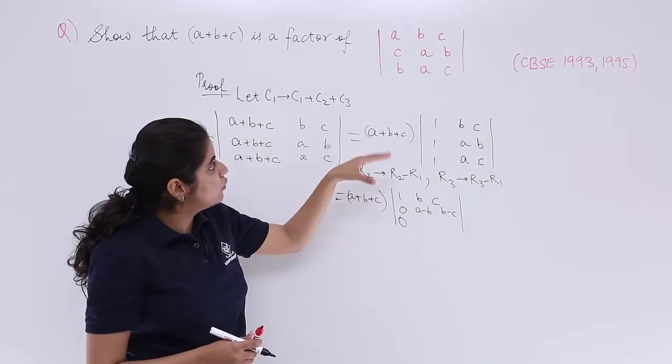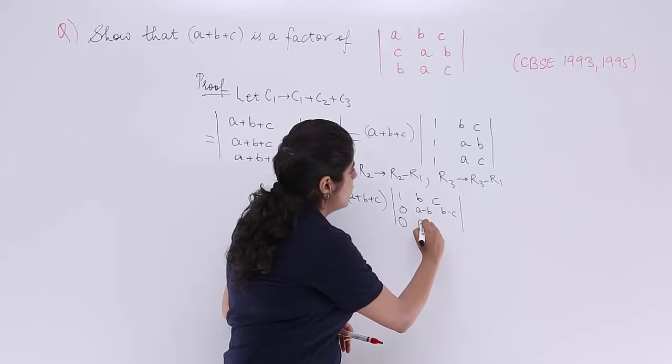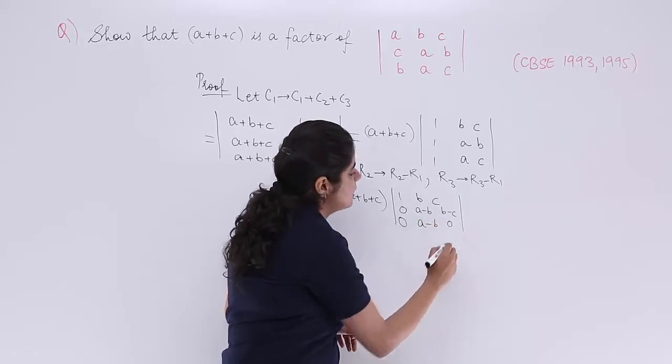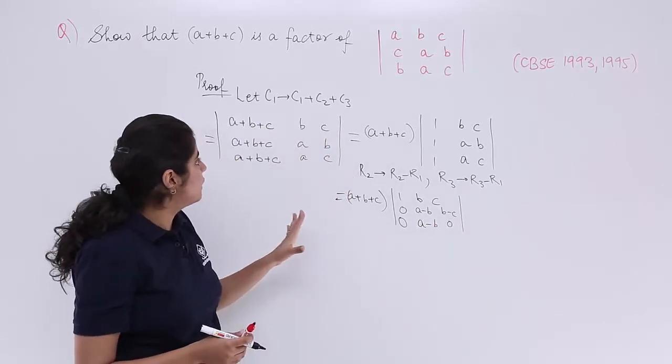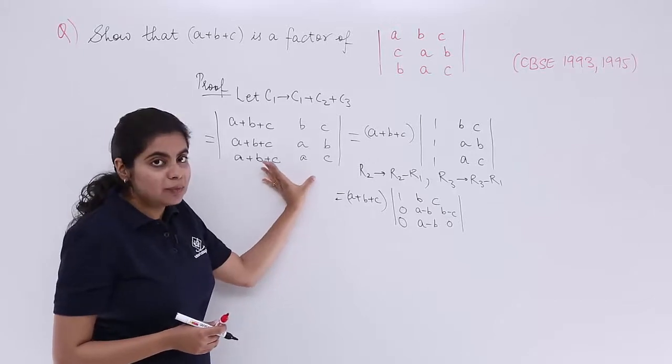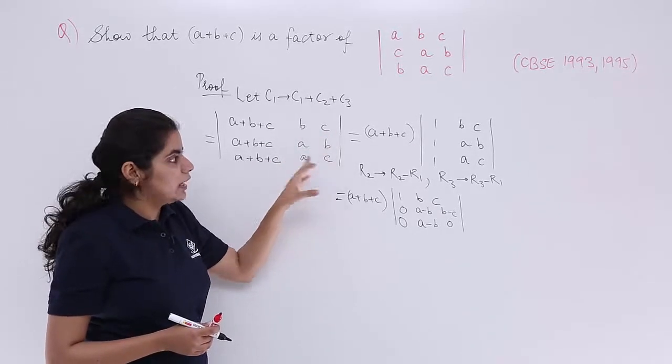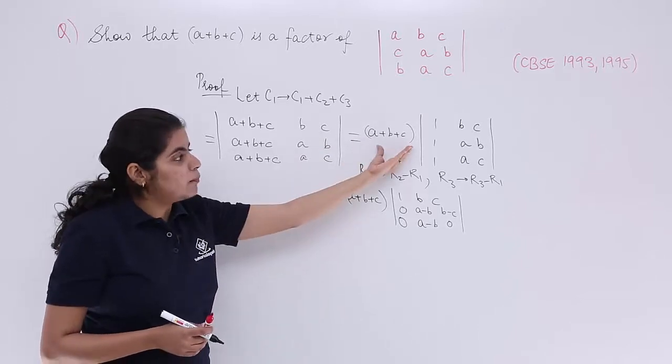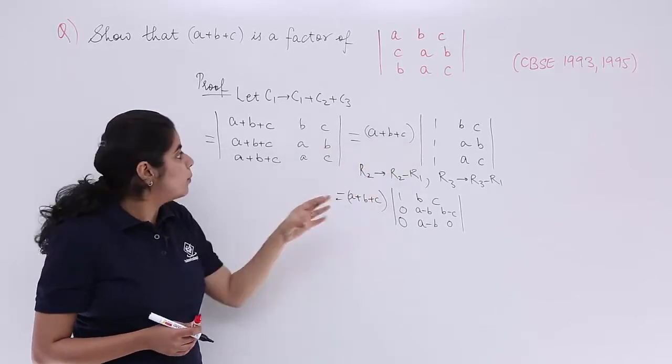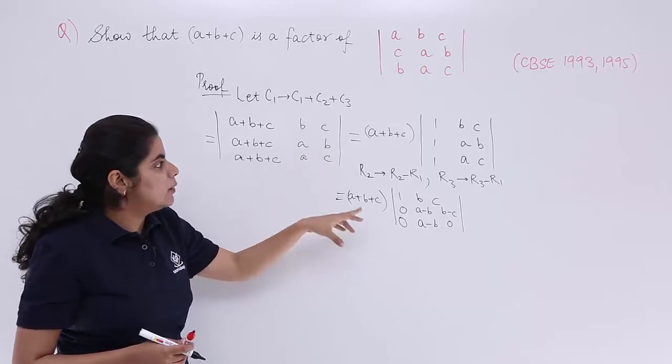Let's see whether we have copied things carefully. We will again check it. So it is a minus b and c minus c is 0. Let's again check what we have done. We were basically adding up things. So we did a plus b plus c. We copied b, c, a, b, and a, c as it is. Then what happened? a plus b plus c was taken out as common. Again, we copied b, c, a, b, a, c.